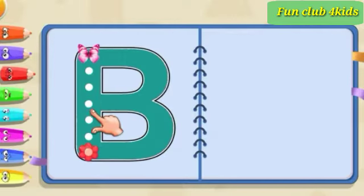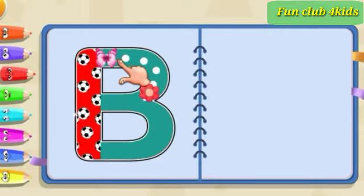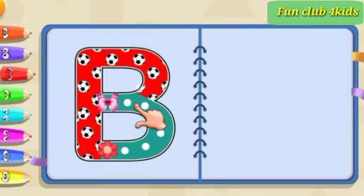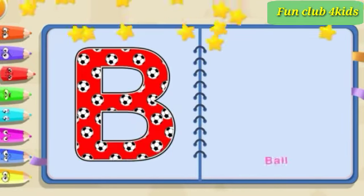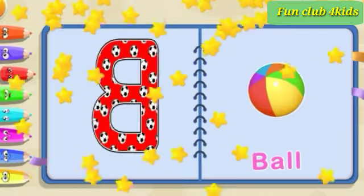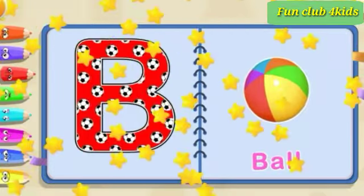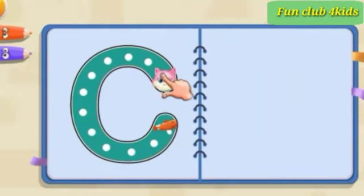Pull down, go to the top, around at the back, to the middle, and around again. B, B is for ball.